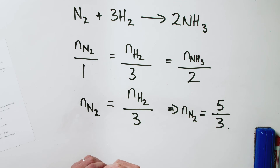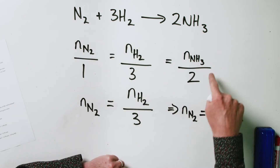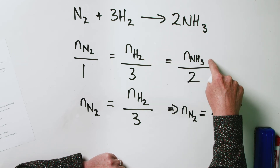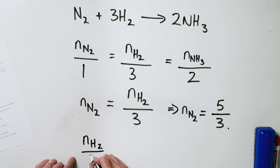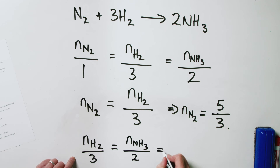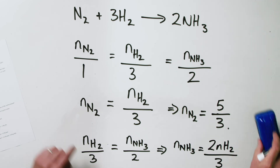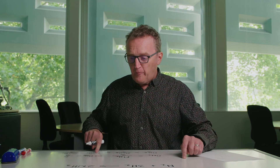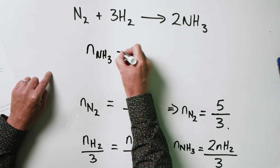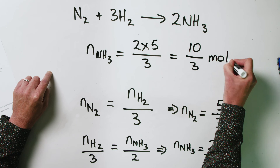Now for the amount of product: the mole ratio between hydrogen and ammonia gives us moles of H₂ / 3 = moles of NH₃ / 2, therefore moles of NH₃ = 2 × moles of H₂ / 3 = 2 × 5 / 3 = 10/3 moles of ammonia.